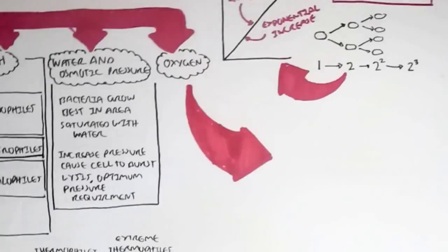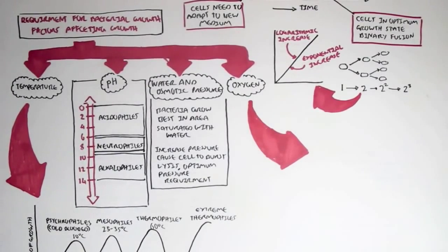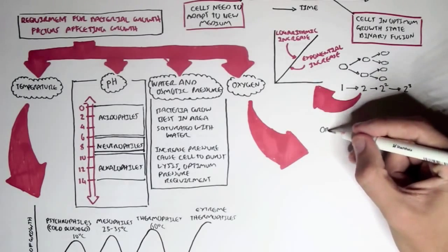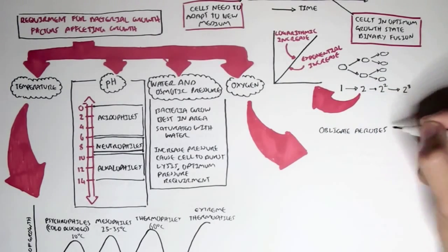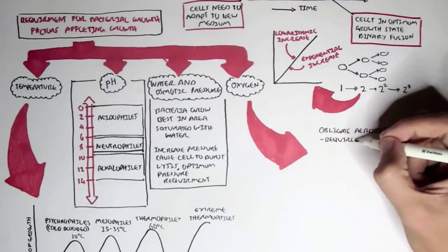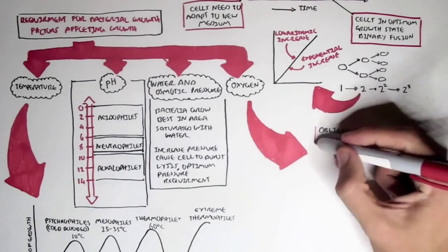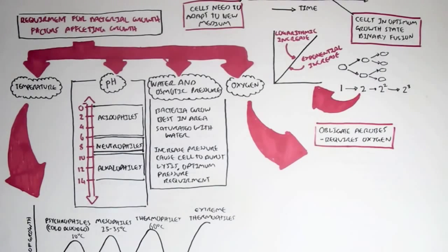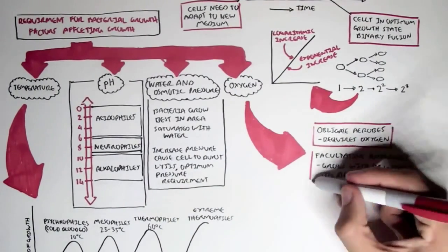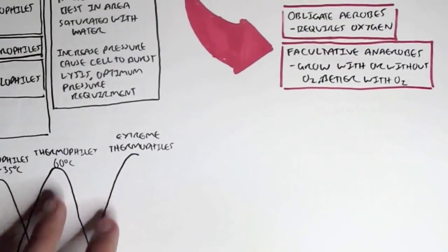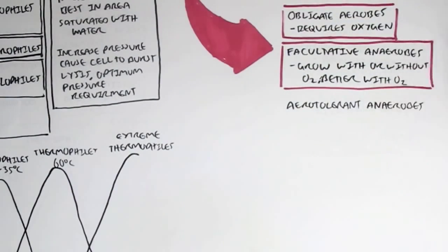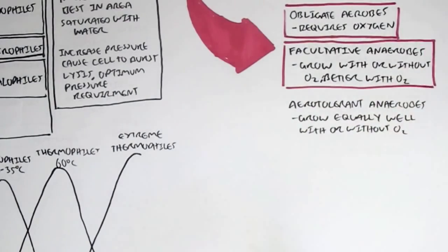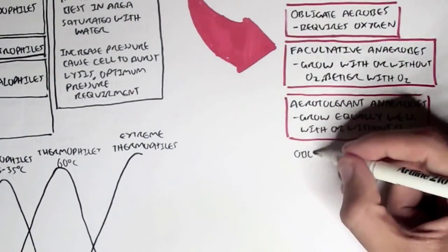Oxygen is another factor which greatly influences bacterial growth, because bacteria can be either anaerobic or aerobic, or in between. So let's look at some classifications of bacteria with oxygen. First of all, we have what's called obligate aerobes, which means these are the types of bacteria which requires oxygen in order to survive. Then we have facultative anaerobes, which grow with or without oxygen, but they grow better with oxygen. Then we have aerotolerant anaerobes, which are bacteria which grow equally well with or without oxygen.